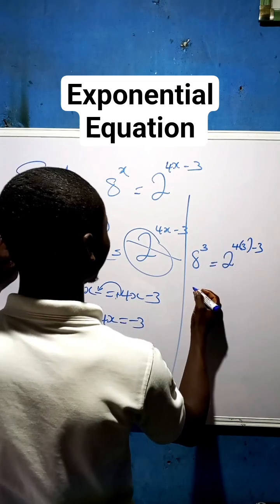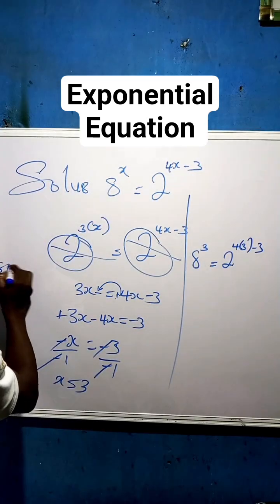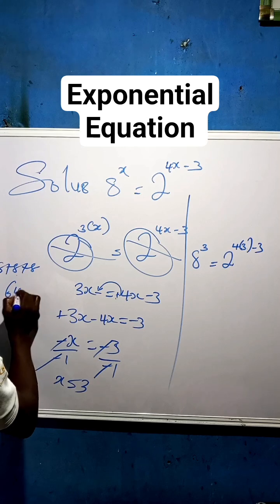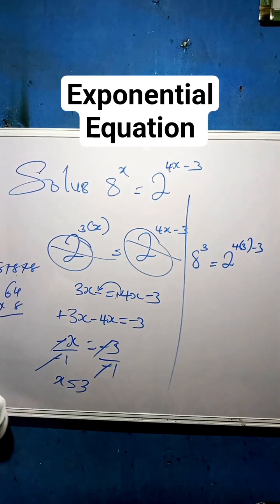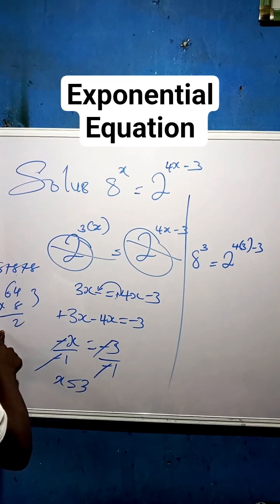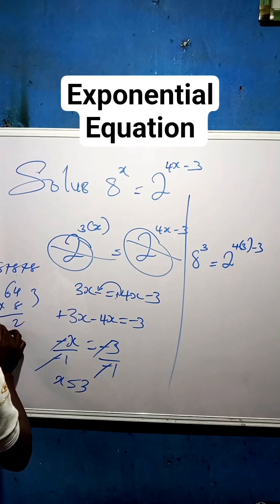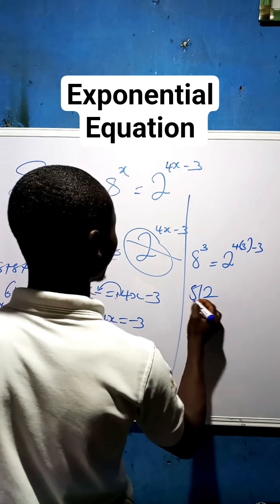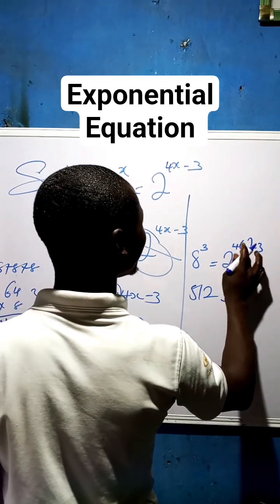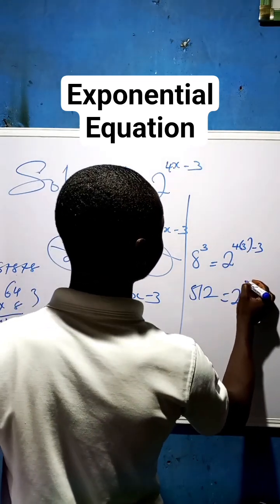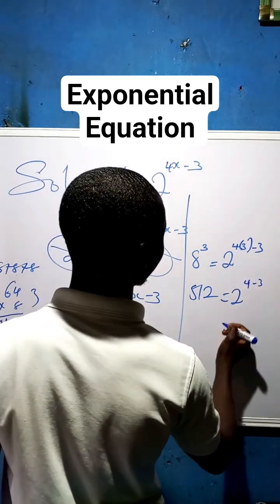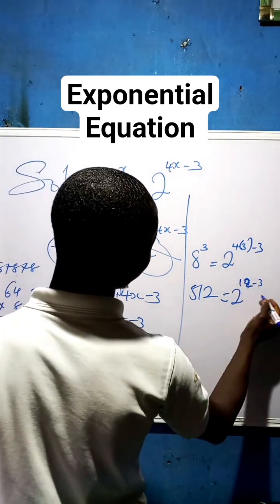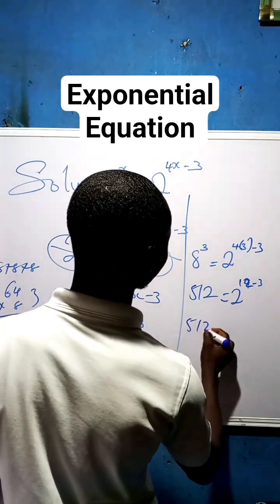8 to the power of 3 gives us 8 times 8 times 8. 8 times 8 is 64, and 64 times 8 is 512. On the right side, 4 times 3 is 12, and 12 minus 3 is 9, so we have 2 to the power of 9. That gives us 512 equal to 512.